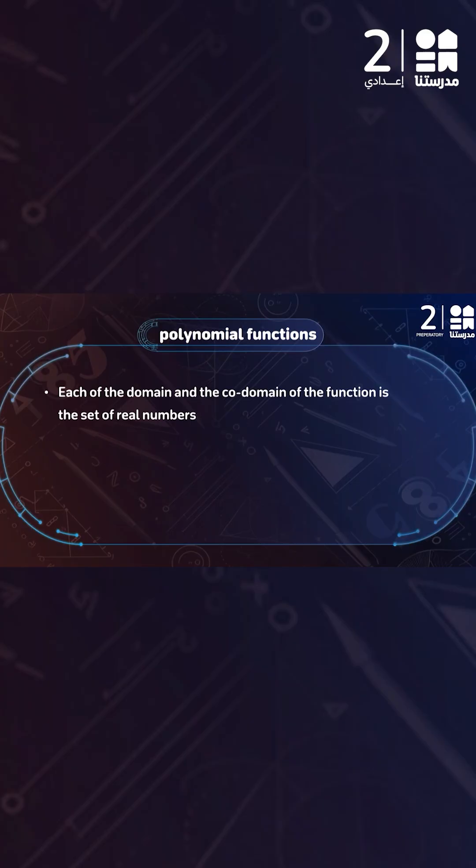For a function to be called a polynomial, we have two conditions. The first condition: the domain and the co-domain of this function must be the set of real numbers. The second condition: the power of the variable x must be a natural number — that is, 0, 1, 2, 3, and so on. Fractions, decimals, or negative powers are not allowed.